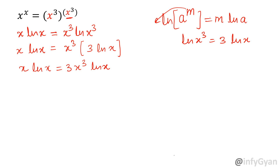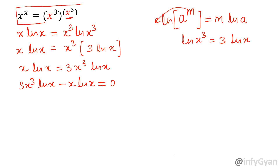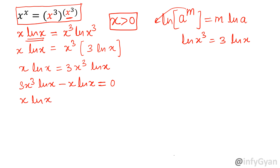Now let us take all terms to the right: 3x cube ln x minus x ln x equals 0. One important point — since we are taking log of the original exponential equation, x must always be positive. You cannot consider x equal to zero, and x cannot be negative. So x is always positive and non-zero. Taking x ln x as a common factor, we get x ln x times (3x squared minus 1) equals 0.